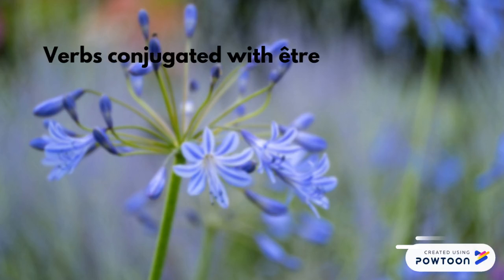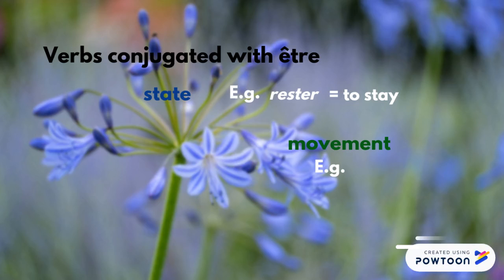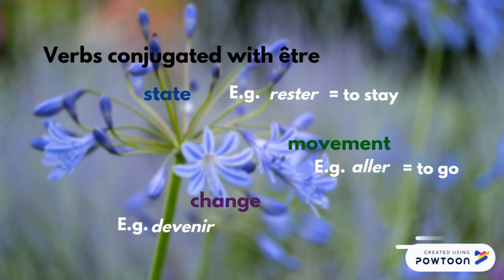Verbs that are conjugated with the auxiliary être indicate a state — for instance, rester, to stay — a movement, for example aller, to go, or a change, for instance devenir, to become.